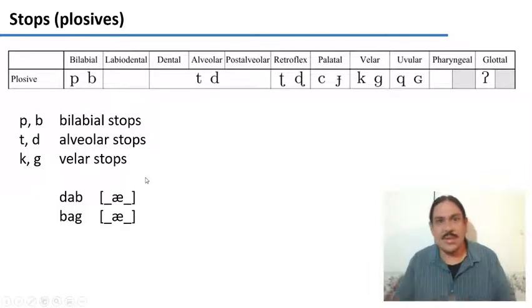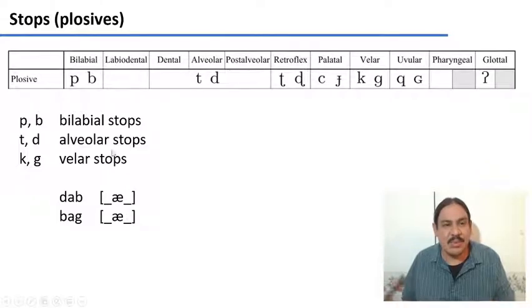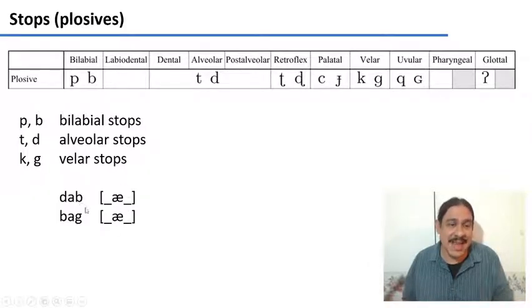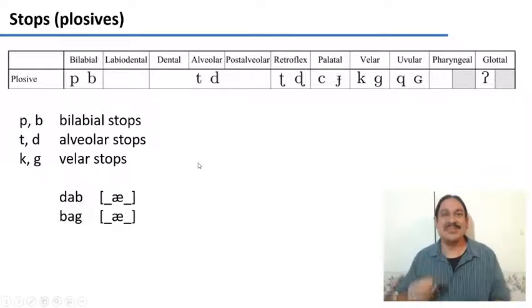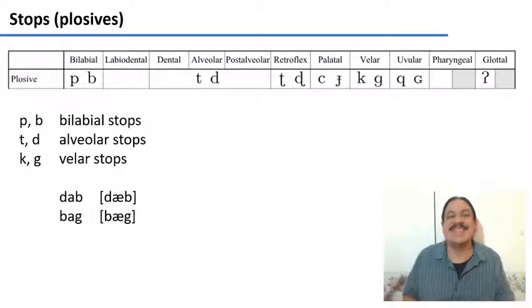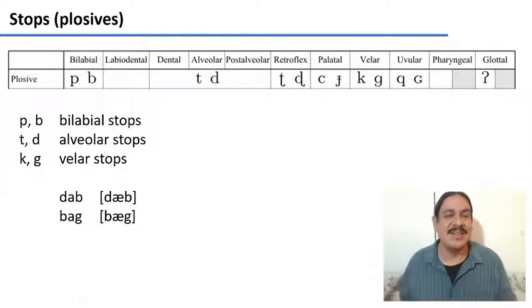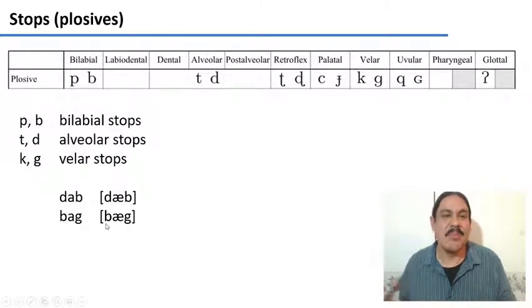So let's try some more transcription. These are words in English, dab and bag. I gave you the IPA vowel here because we haven't studied them yet. And I wanted to try to fill in the blanks with the IPA symbol that would go in here. So I wanted to try to give me the IPA transcriptions for the English words dab and bag. Give it a shot. Please pause the video.